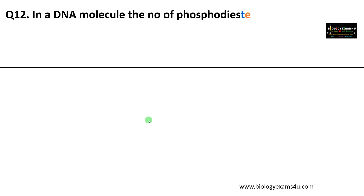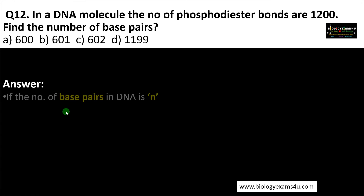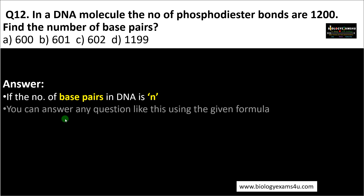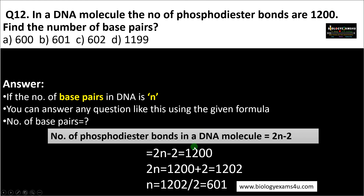In a DNA molecule the number of phosphodiester bonds is 1200. Find the number of base pairs. Using the equation 2N minus 2 = 1200, so 2N = 1202, therefore N = 1202 divided by 2 = 601. The number of base pairs is 601.